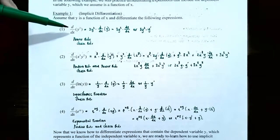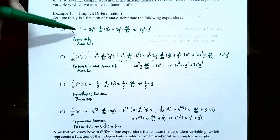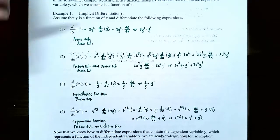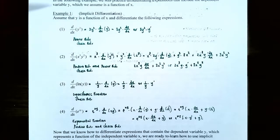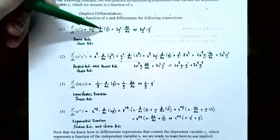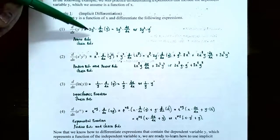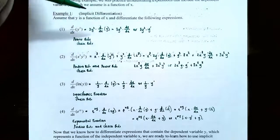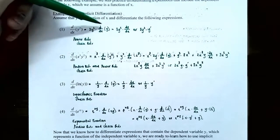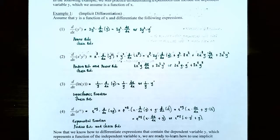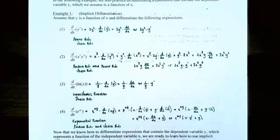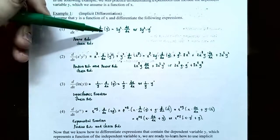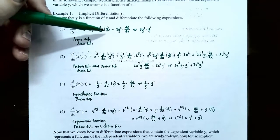Example one, implicit differentiation: assume that y is a function of x and differentiate the following expressions. Number one: what's the derivative with respect to x of y cubed? The derivative of the outside function is 3y squared. But since y is a function, you need to take the derivative of the inside function using the chain rule, so multiply by dy/dx. That gives 3y squared times dy/dx, or using prime notation, 3y squared times y prime. This uses the power rule and, importantly, the chain rule because y represents the inside function.